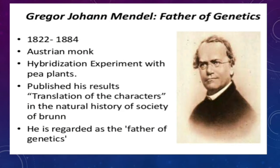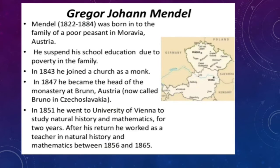Let us now discuss a very important man in the genetics field — the father of genetics, Gregor John Mendel. He was born in 1822 and died in 1884. He was an Austrian monk who performed lots of hybridization experiments in his kitchen garden, where he used Pisum sativum, that is the garden pea plant, and he discovered many characters and phenomena occurring in the pea plant.